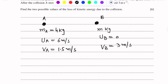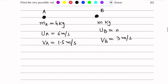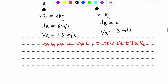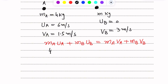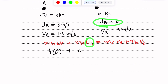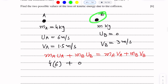Now we use the law of conservation of momentum. Momentum before collision equals momentum after collision: MA·UA + MB·UB = MA·VA + MB·VB. Putting in the values: MA is 4, initial speed is 6 m/s, plus 0 because the initial speed of particle B is 0, so MB·UB is 0.